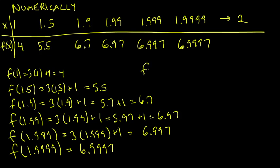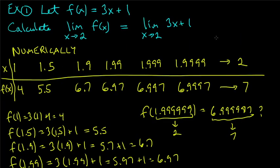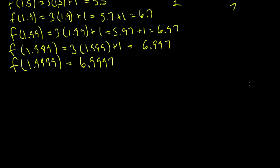If we plug in 1.9999999, we'd get something like 6.9999997. As these x values get closer and closer to 2, the y values get closer and closer to 7. It seems fairly clear the limit L is going to be 7. But notice I only plugged in numbers less than 2 — I should also plug in numbers bigger than 2.